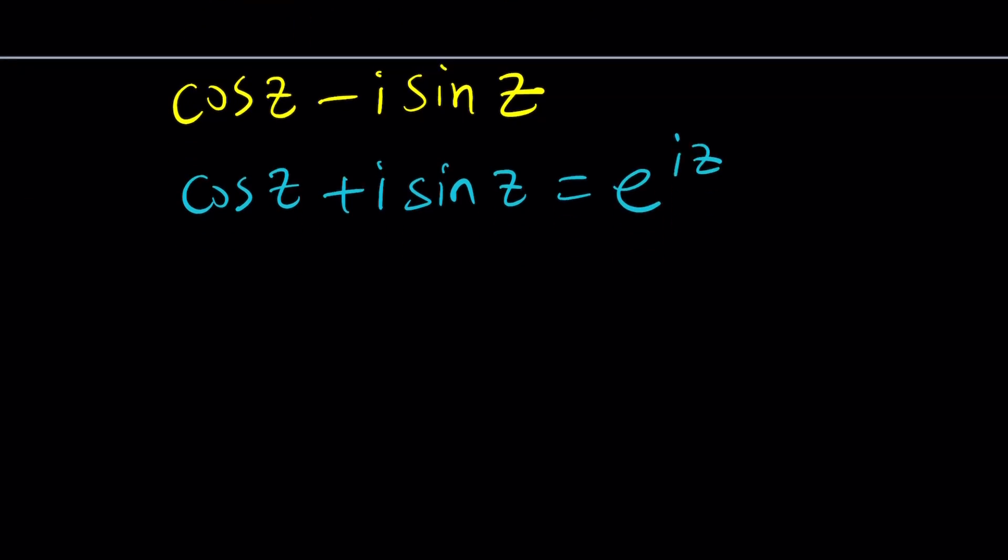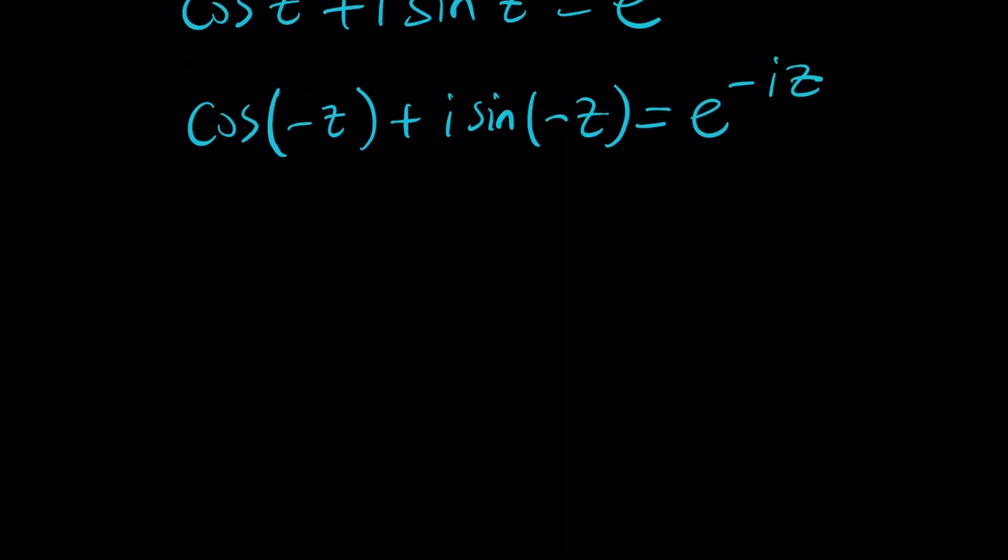So now if you replace z with negative z, you're going to get cosine of negative z plus i sine of negative z. And that should equal, replacing z with negative z, we're going to get i times negative z, which is negative i z. Awesome. We got it. But what is cosine of negative z? Since cosine is even and sine is odd, we can write this as cosine of z.